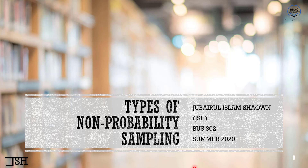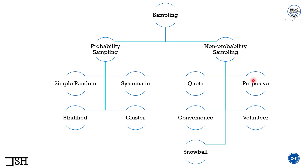Hello there all. By now you have seen all the videos on different types of probability sampling. In this video I am going to start with non-probability sampling. Just to give you a refresher, these are the different types of non-probability sampling: quota sampling, purposive sampling, convenience sampling, volunteer sampling, and snowball sampling.